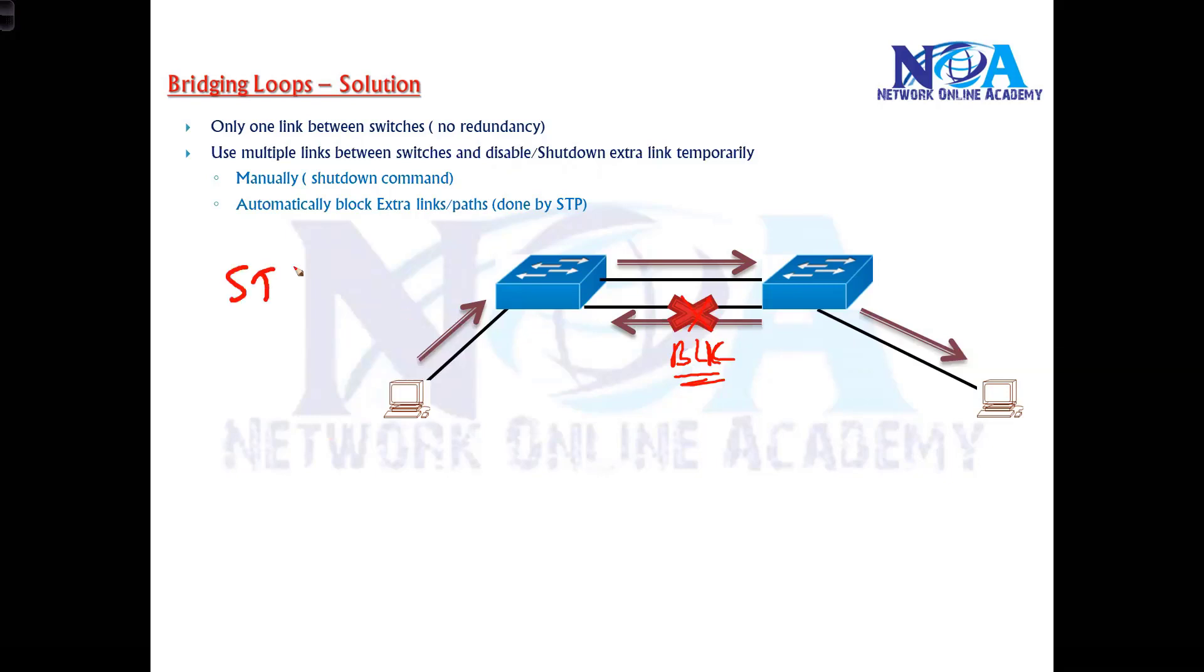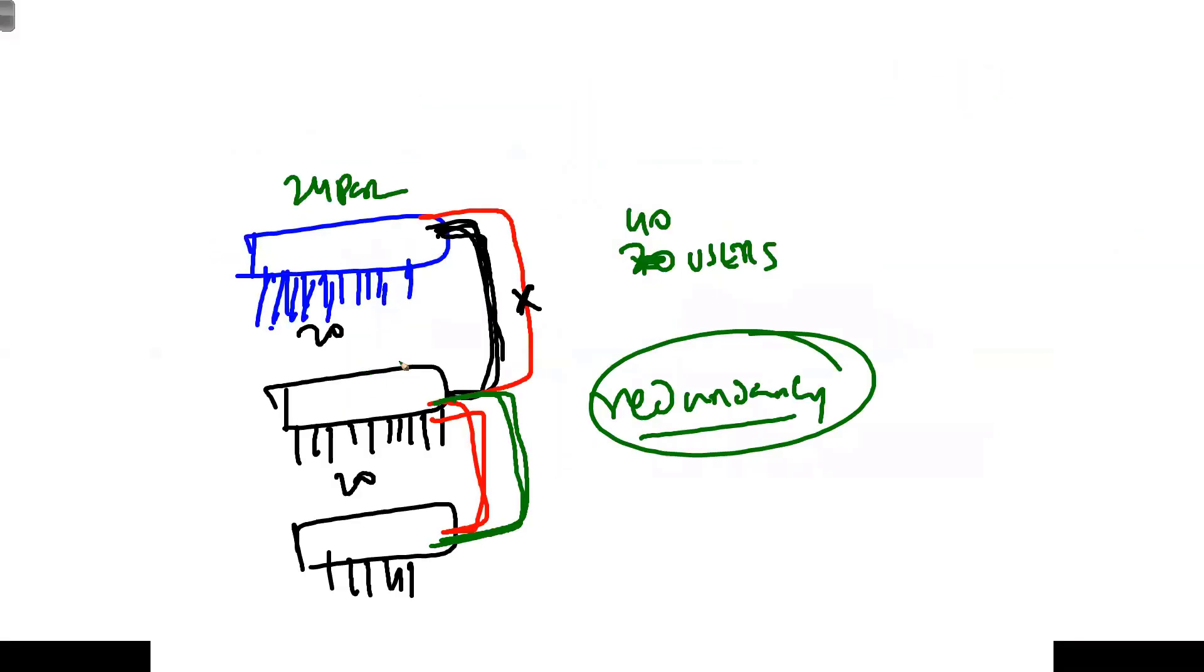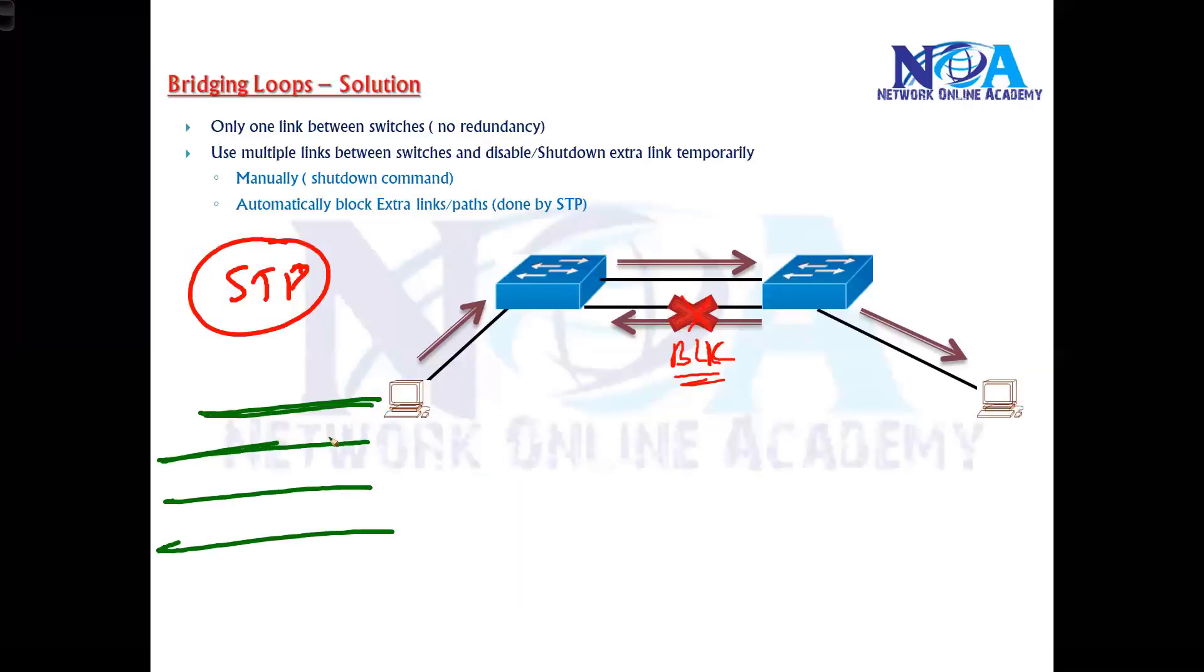So the job of the STP is to ensure that in your network, how many multiple paths you have. Because typically in the production scenarios, as I said, you may have two links, you may have three links, you may have one more link from here. So typically you may have three to four paths or maybe more than that. Depends how you connect.